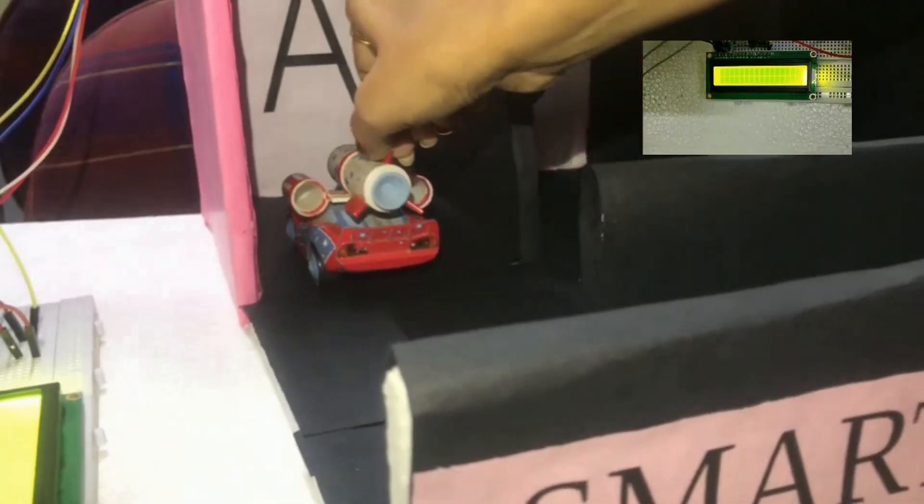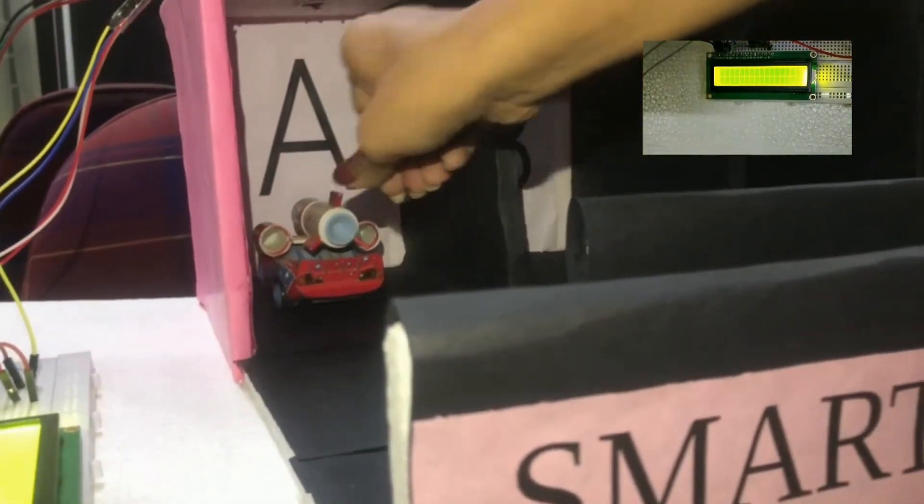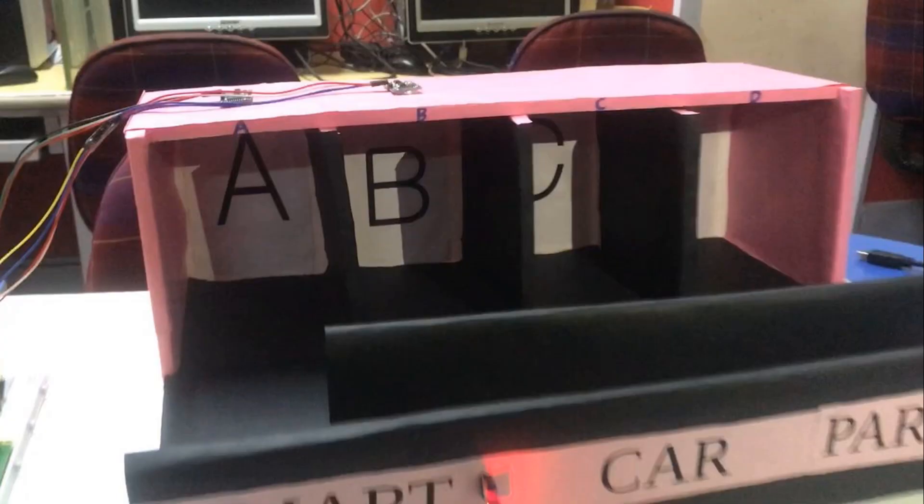Now how do we know if the car is there or not? This is done with the help of ultrasonic sensors. Ultrasonic sensors measure the distance from the ceiling to the floor. If a car is in between, the distance will decrease and we would know that the car has come.